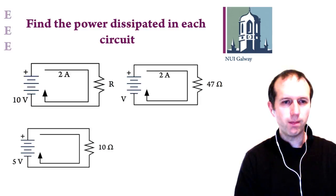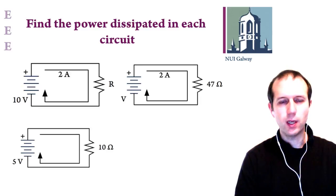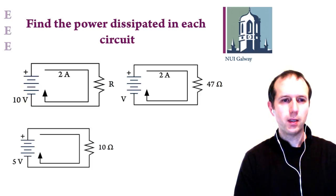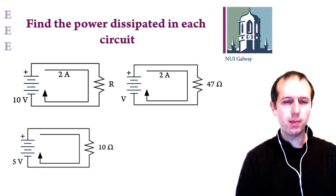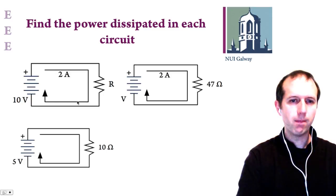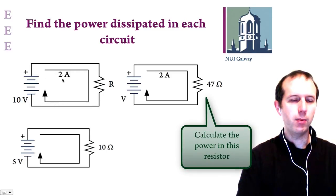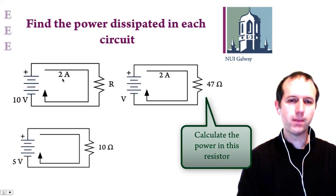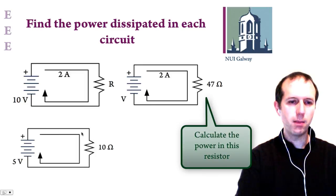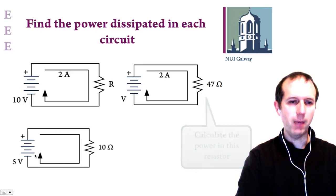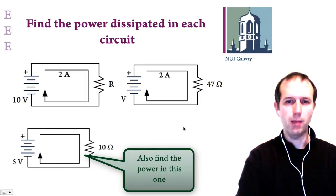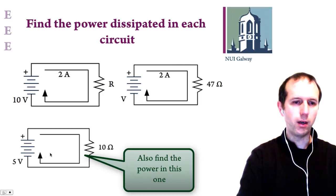Looking at circuit examples with different values, we can use alternative versions of Watt's law to calculate power dissipated in each circuit. For a simple case, P = VI — just multiply V by I. For the other circuits, use either P = I²R or P = V²/R depending on which quantities are known.